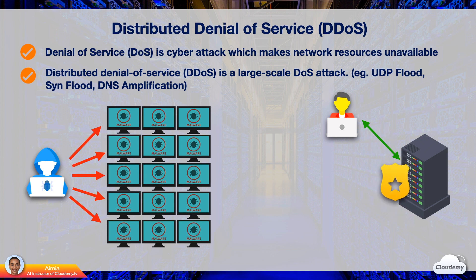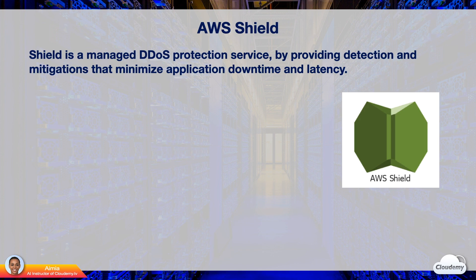You can use DDoS protection services to effectively detect and prevent common DDoS attacks. AWS Shield is a managed DDoS protection service that safeguards applications running on AWS. It provides always-on detection and automatic in-line mitigations that minimize application downtime and latency.